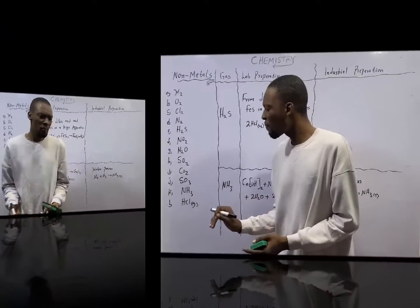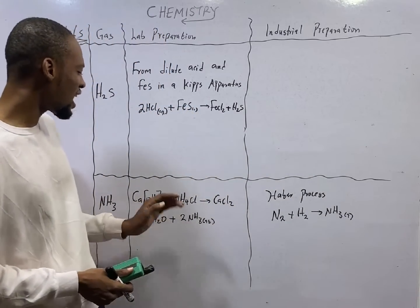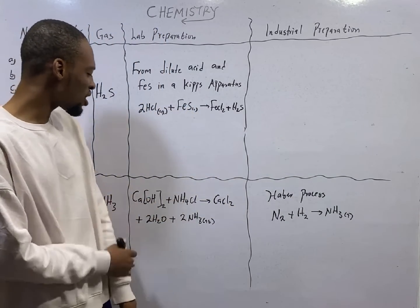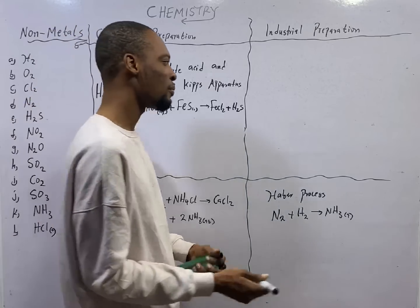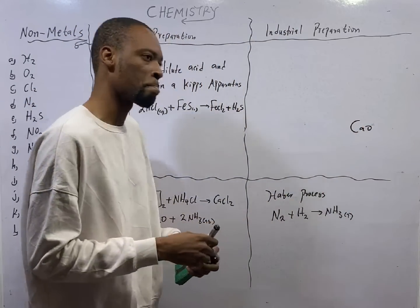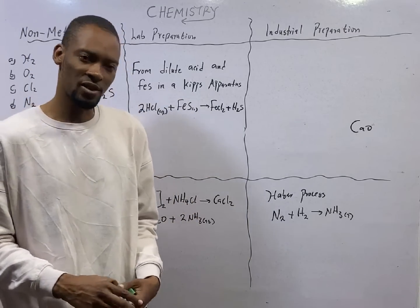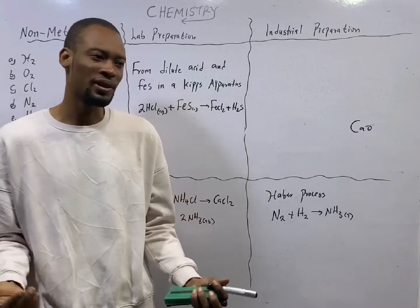To prepare ammonia in the lab, we use slaked lime. Calcium hydroxide is slaked lime, while calcium oxide is quick lime. Sodium hydroxide is caustic soda. Potassium hydroxide is caustic potash.